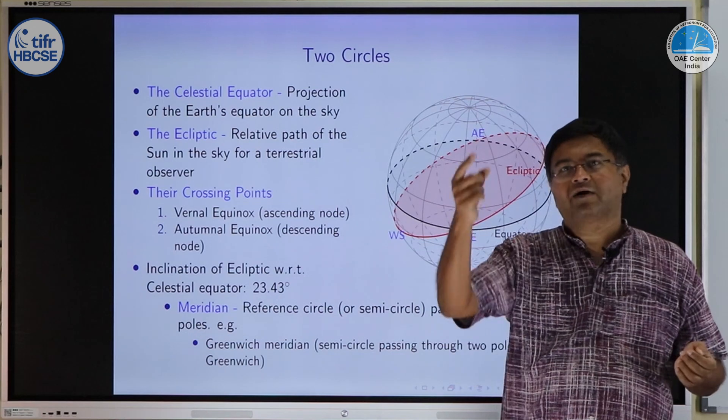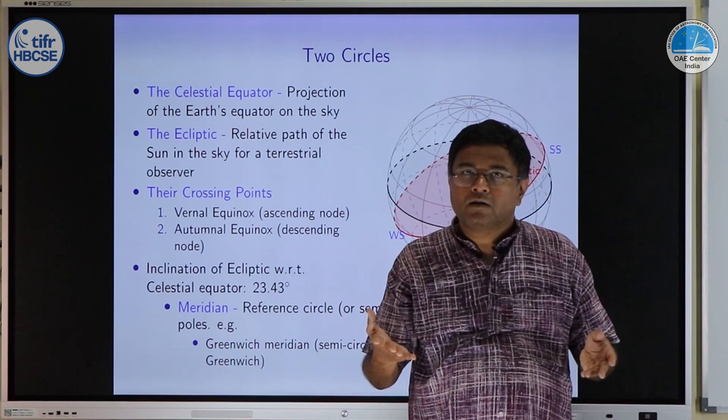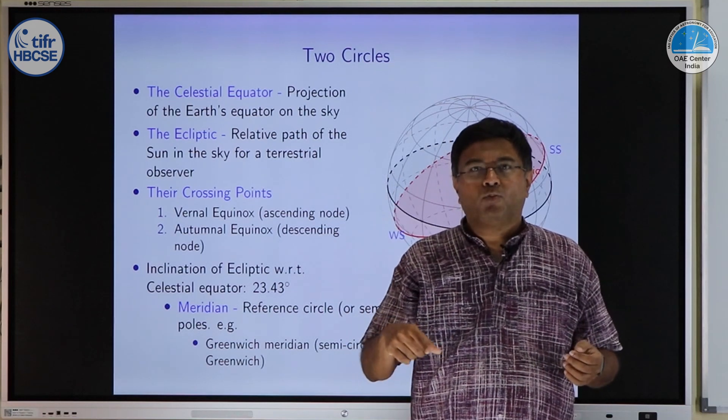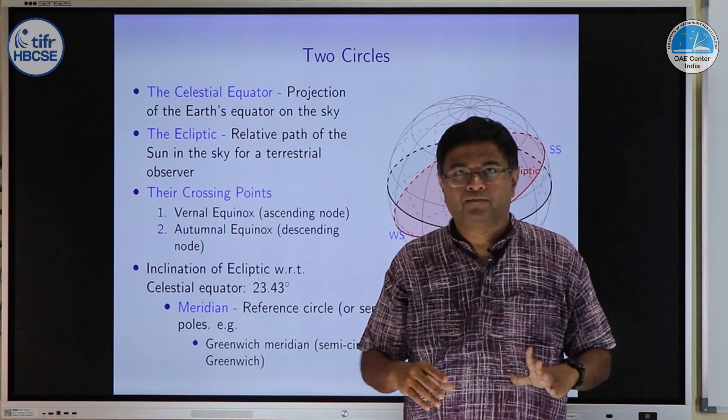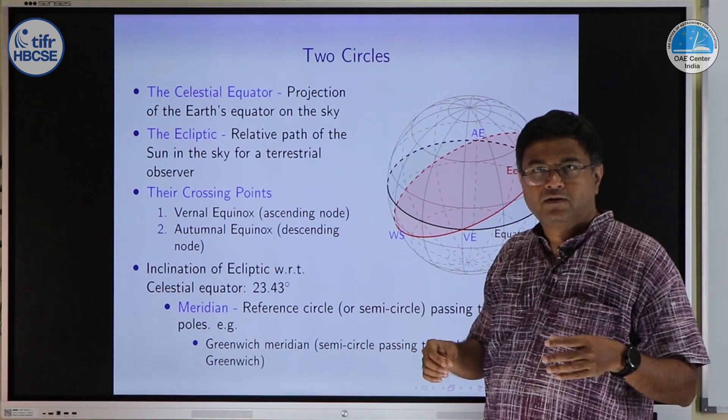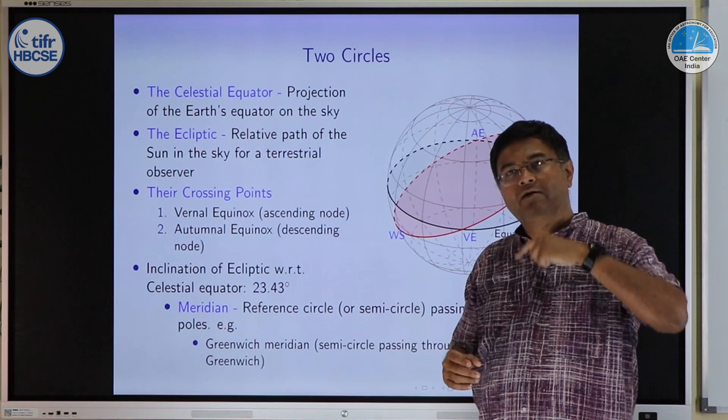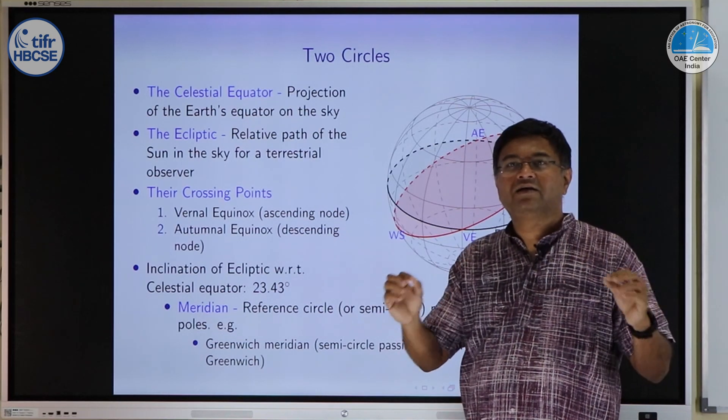Meridian is a general term of a circle or for many particular purposes semicircle which passes through both poles of that given sphere and it is centered at the origin of the sphere. So it is not just any type of circle but it is a circle which passes through both poles and centered at the origin.